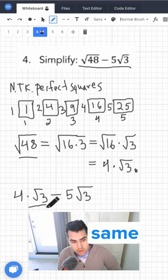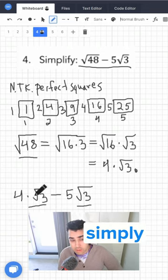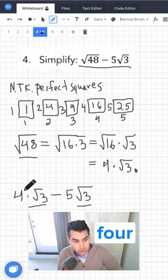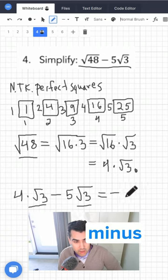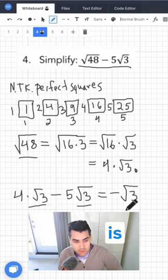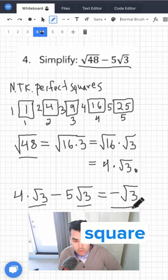Now because we have the same terms here, we can simply evaluate 4 minus 5 which is equal to minus 1. So this is the final answer, minus square root of 3.